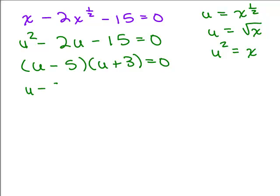So I could solve for u: u minus 5 is 0 or u plus 3 is 0. So u is 5 or u is negative 3. The idea of the u substitution is it's easier to factor when you don't see all these fractional exponents. Now remember, you're trying to find out what x equals, not what u equals. So now we have to go back.